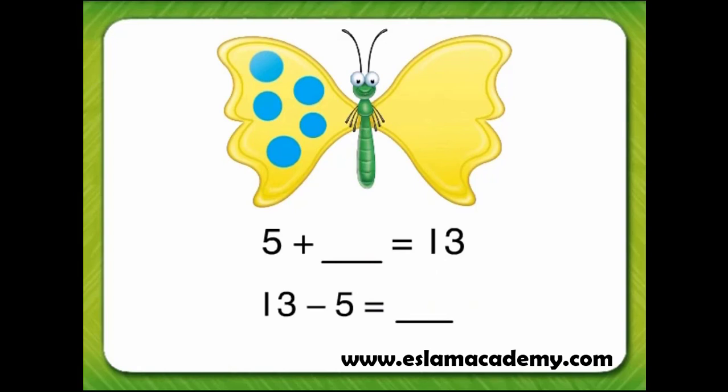The related subtraction problem is 13 minus 5 equals some number. We can count on from 5 to 13 and draw dots on the right wing of the butterfly.